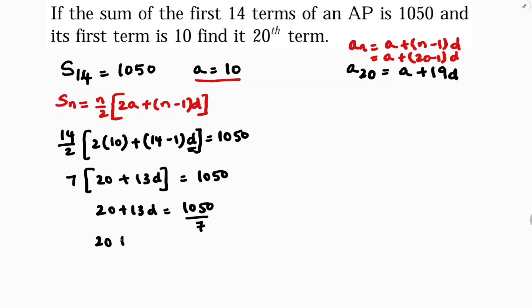So 20 plus 13D, here if I will cancel this, 7 times 1 is 7, 3 is left, 35, 7 times 5 is 35.